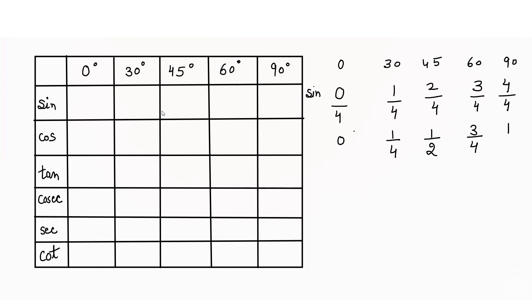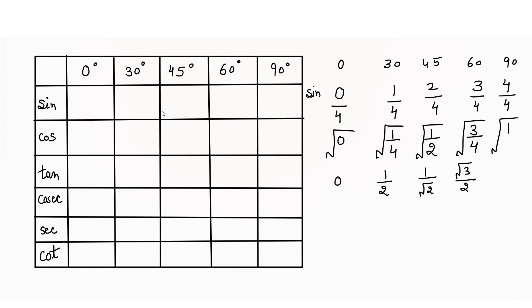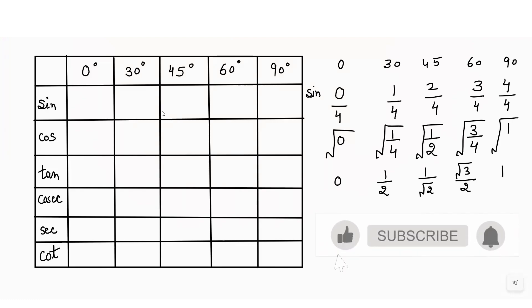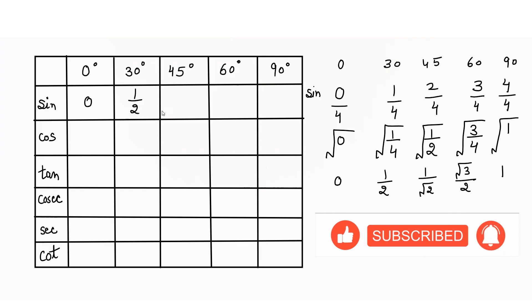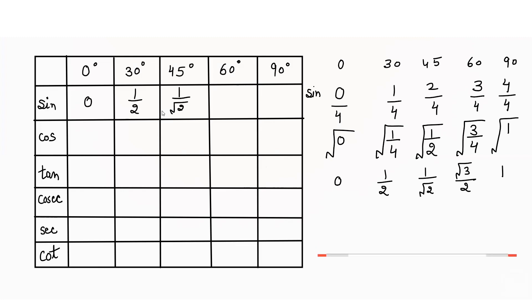After this, we have to take the square root — that is our third step. Taking the square roots: √0 = 0, √(1/4) = 1/2, √(1/2) = 1/√2, √(3/4) = √3/2, and √1 = 1. So the sine values in the table are: 0, 1/2, 1/√2, √3/2, and 1.